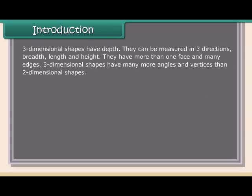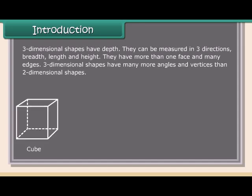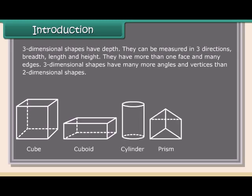Three-dimensional shapes have depth. They can be measured in three directions: breadth, length, and height. They have more than one face and many edges. Three-dimensional shapes have many more angles and vertices than two-dimensional shapes, such as cube, cuboid, cylinder, prism, pyramid, etc.